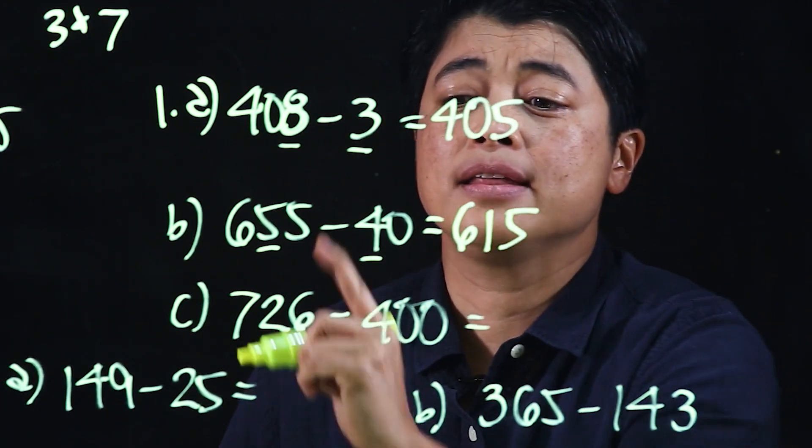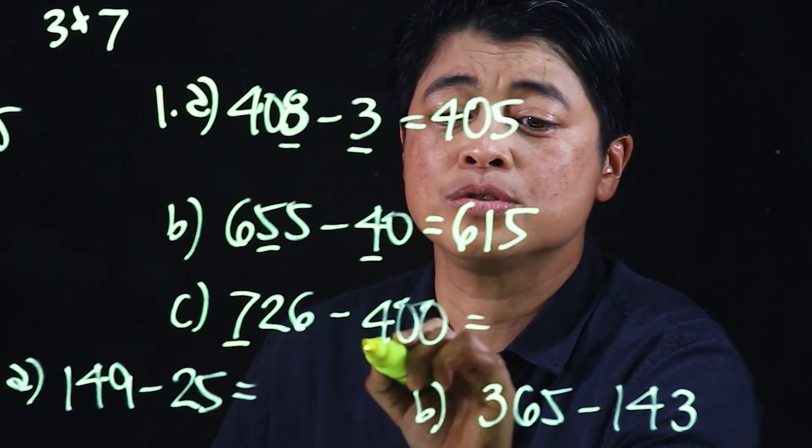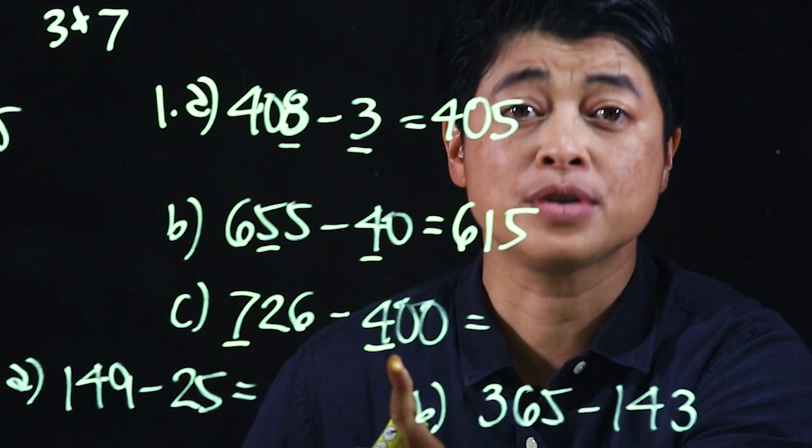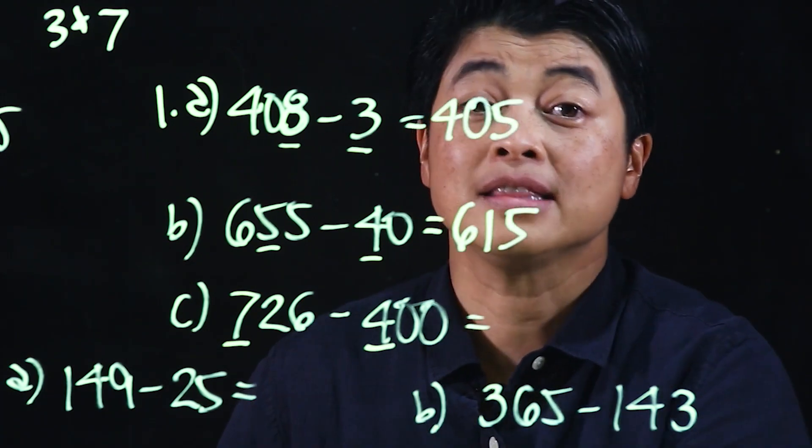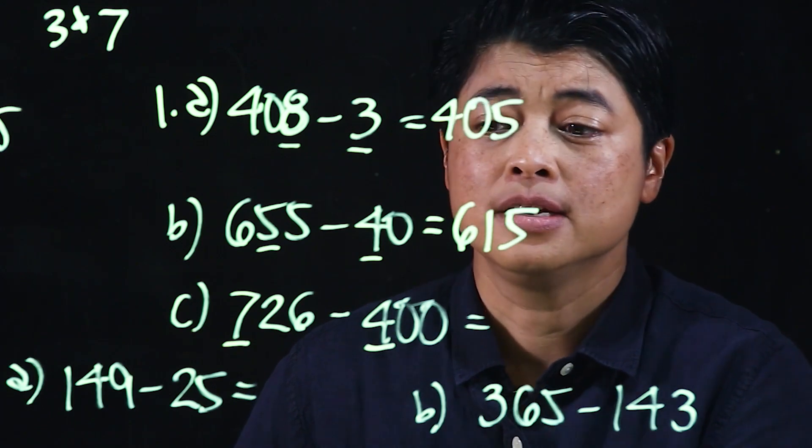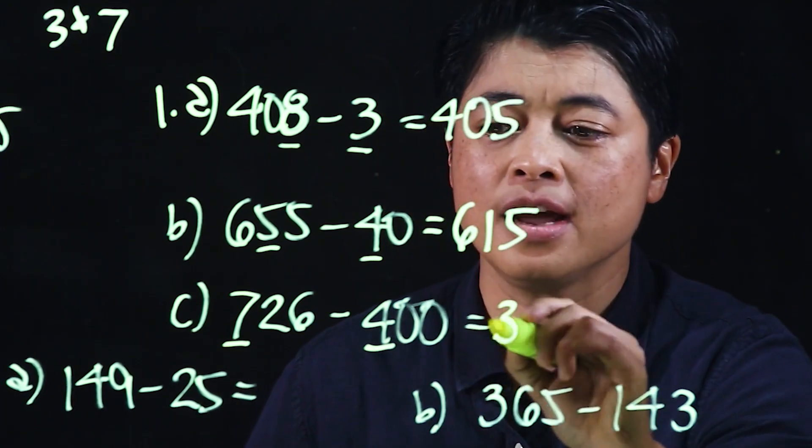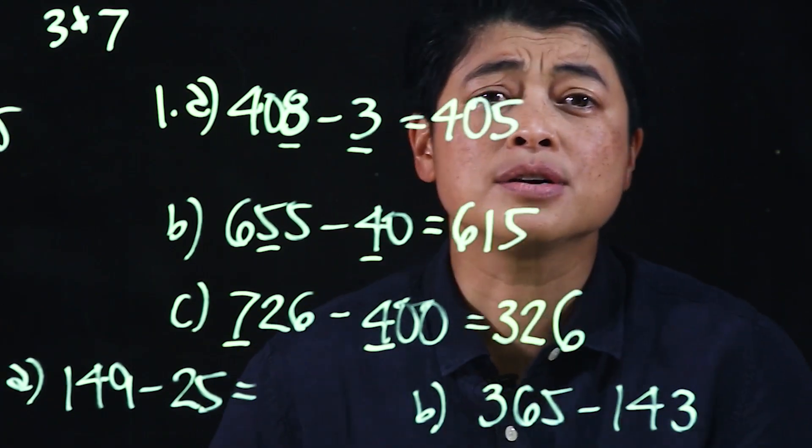So again, this is mental subtraction, single place value subtraction. So this is hundreds that are subtracted, leaving the ones and the tens to be copied. So 700 minus 400 is 300, and copy 2 and 6.